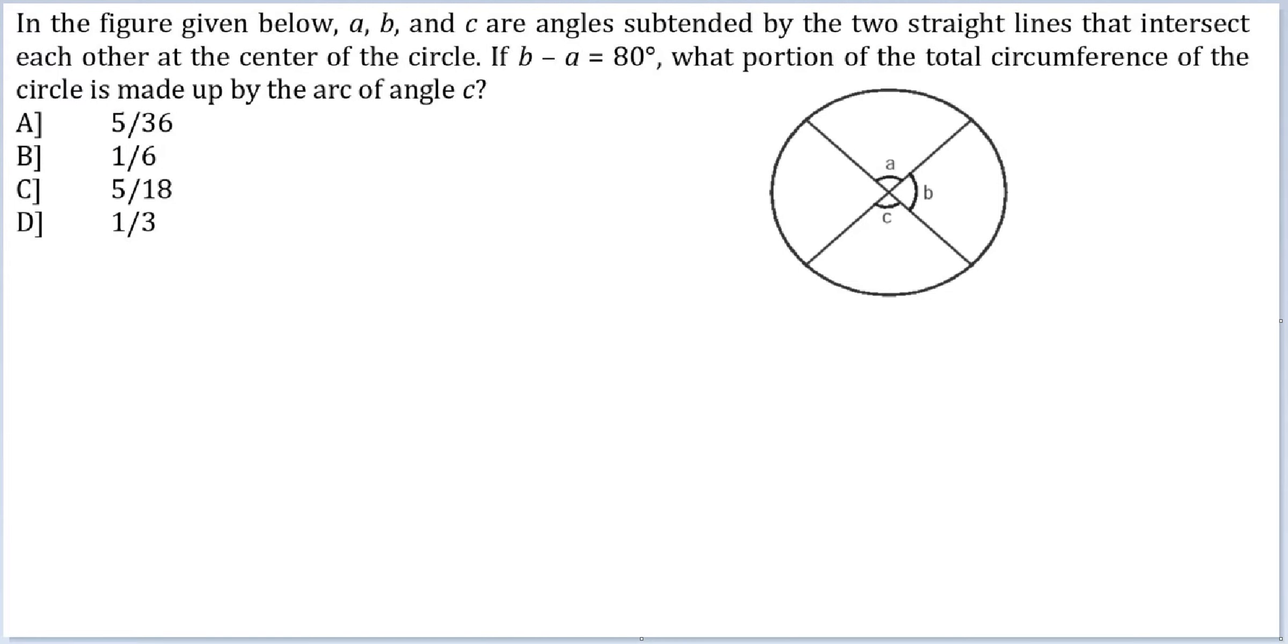Let's look at this question. In the figure given below, a, b, and c are angles subtended by two straight lines that intersect each other at the center of the circle.